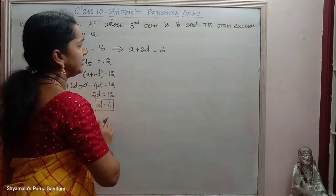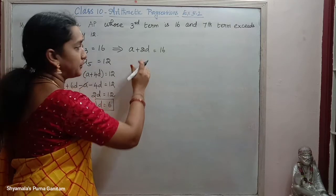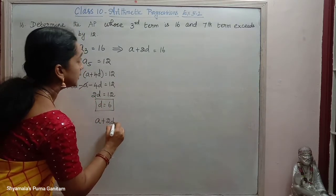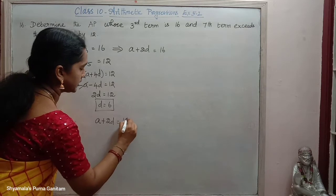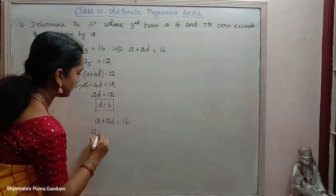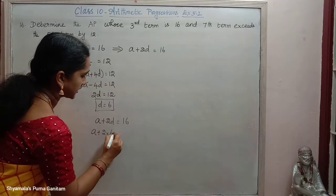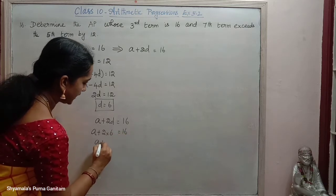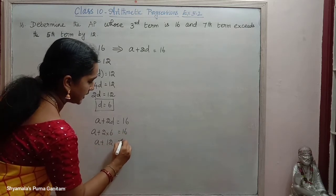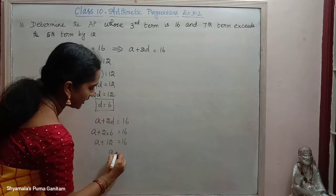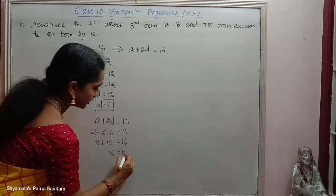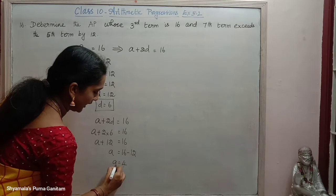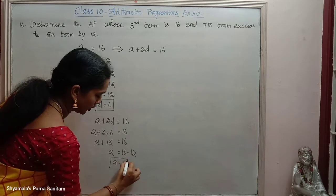Substituting D equal to 6 into condition 1: A plus 2 into 6 equals 16, so A plus 12 equals 16, therefore A equals 16 minus 12, which is equal to 4.